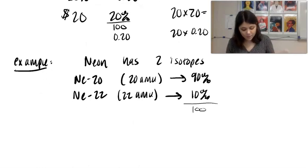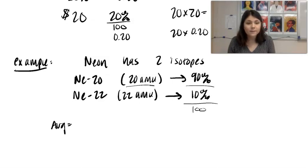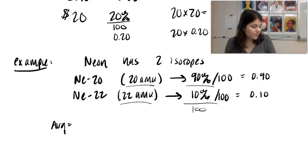So looking back at our equation, we're going to need to take the value and multiply by the relative abundance plus the next one multiplied by its relative abundance. So here, I'm going to divide by 100. I get 0.90, 0.10. This equals up to 1, which is what I need.